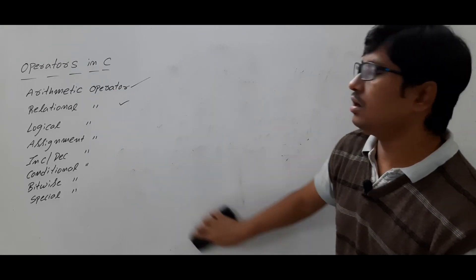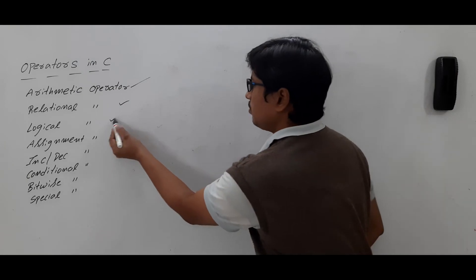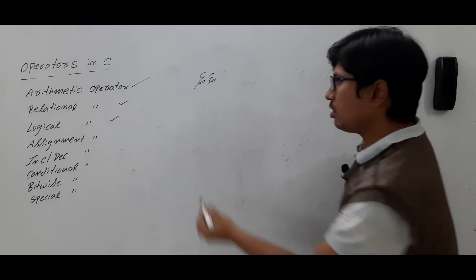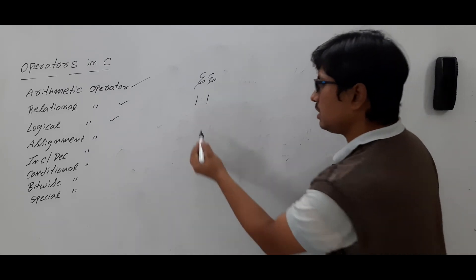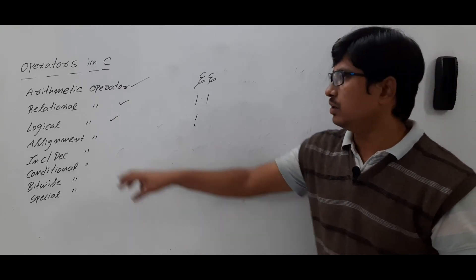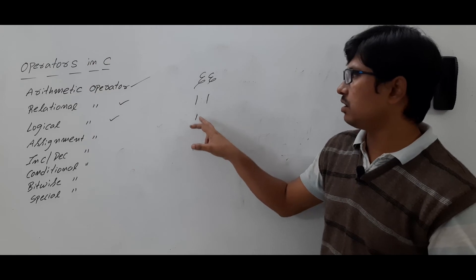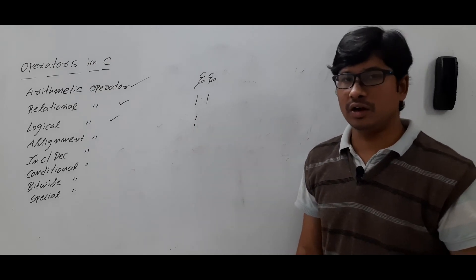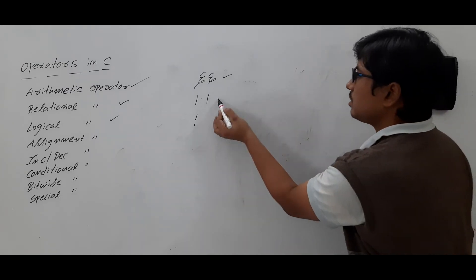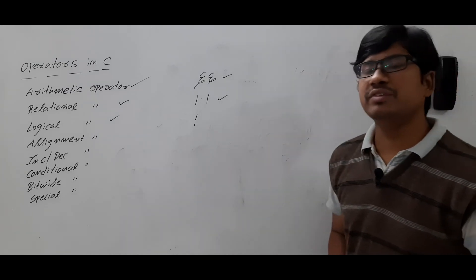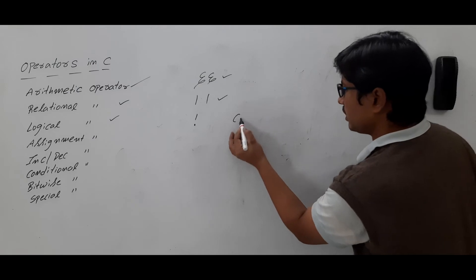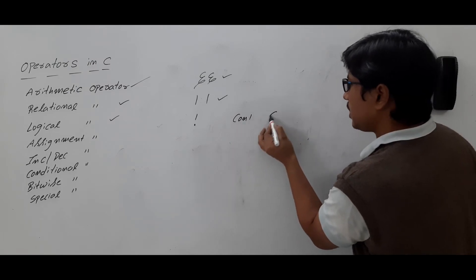Now let me discuss about the logical operator. The logical operators are: logical AND, logical OR, and logical NOT. The logical AND and logical OR are used when you have more than one condition. Suppose you have condition 1 and condition 2.